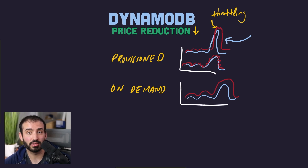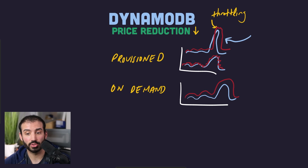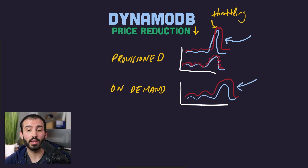AWS is also offering that 50% cost reduction for your RCUs and your WCUs for on-demand, which is a really great thing to see.